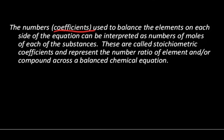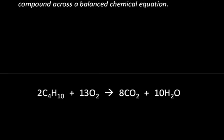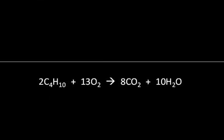Let me show you an example of what I'm talking about. In this balanced chemical equation, we have the combustion of butane. Butane is C4H10. It's reacting with oxygen to yield carbon dioxide and water. The numbers in front of all of these compounds or elements are the stoichiometric coefficients.